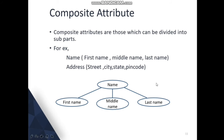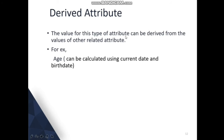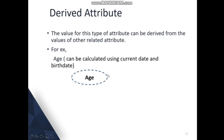A derived attribute is one whose value can be derived from the values of other related attributes. For example, 'age' can be calculated using the current date and the birth date. We can store age directly, but its value has to be calculated from birth date and current date. This kind of attribute is known as a derived attribute, and it is represented by a dashed oval.